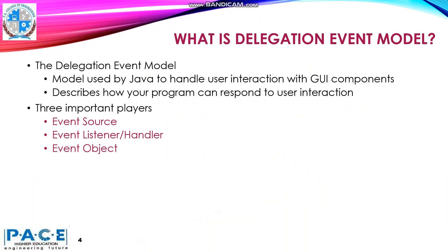What is the Delegation Event Model? The Delegation Event Model is used by Java to handle the user interactions with the GUI component. It describes how your program can respond to the user interaction. There are three main players in the Delegation Event Model: Event Source, Event Listener or Handler, and Event Object.